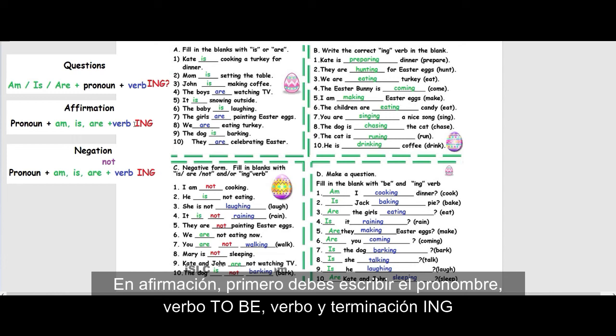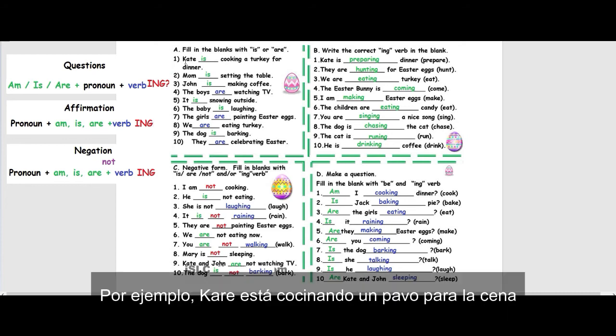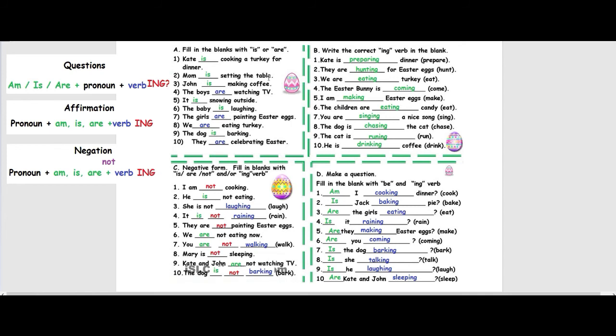For example, Kate is cooking a turkey for dinner. Mom, Kate is a she, is setting the table. John, John is a he, is making coffee.